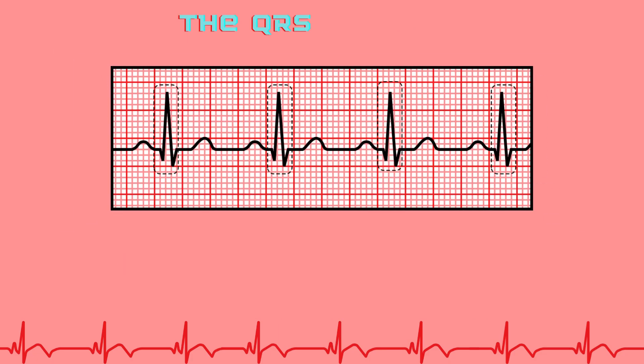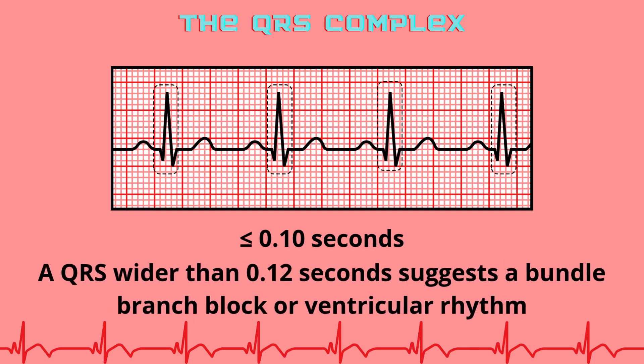The QRS-complex represents ventricular depolarization. It is normally narrow and sharp, with a normal duration of less than 0.10 seconds, approximately 2.5 boxes. A QRS wider than 0.12 seconds suggests a bundle branch block or ventricular rhythm. A normal QRS may include a small initial negative deflection (Q-wave), a tall positive R-wave, and a final negative S-wave.